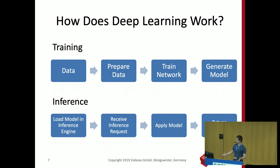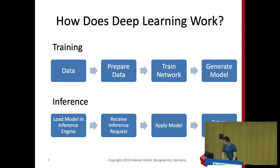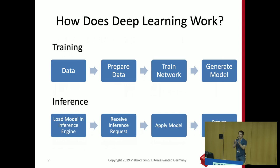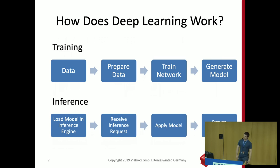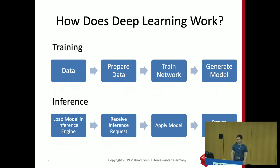This model is usually saved as a file and used in the next operation: inference. For inference, you load the model you just created and you're now ready to classify new images of cats and dogs. You send a request to the model and ask: is this a cat or a dog? It will tell the difference within a limit of accuracy. It's really hard to find something that's 100% accurate, but the more data you have, the closer you get to 100% — though you're probably never going to get there.